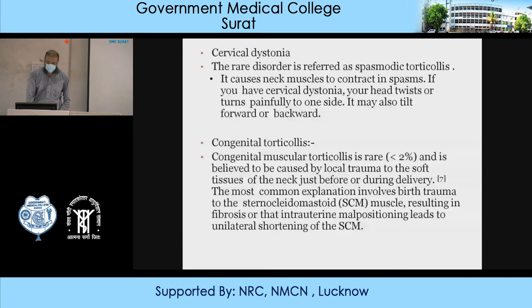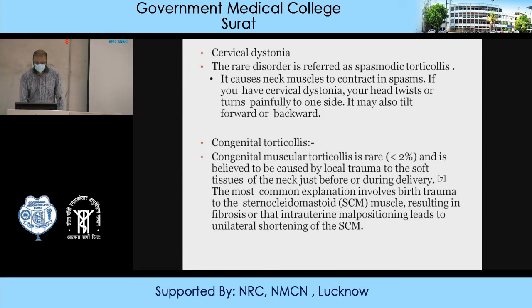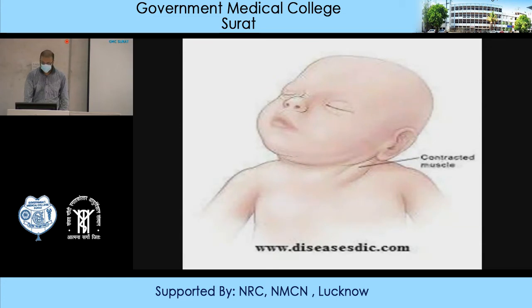Cervical dystonia is a rare condition referred to as spasmodic torticollis. It causes the neck muscles to contract in spasm; the head twists or turns painfully to one side and may also tilt forward or backward. Congenital torticollis is rare — less than 2% — and is believed to be caused by local trauma to the soft tissue of the neck just before or during delivery. The most common explanation involves birth trauma to the sternocleidomastoid muscle resulting in fibrosis, or intrauterine malpositioning leading to unilateral shortening of the sternocleidomastoid.